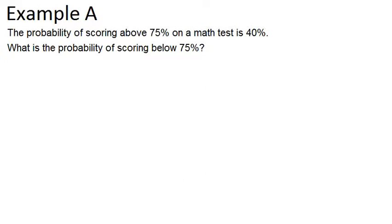Example A says the probability of scoring above 75% on a math test is 40%. What is the probability of scoring below 75%? This is an example of an event with two possible outcomes. You can either score above 75% or you can score 75 or below — it's one or the other.